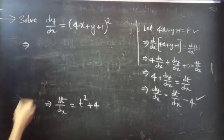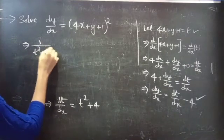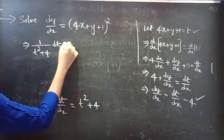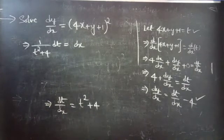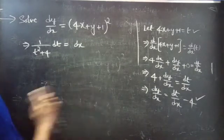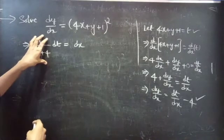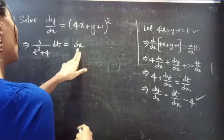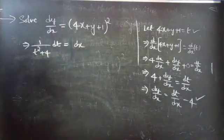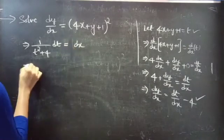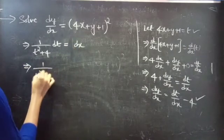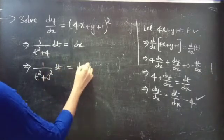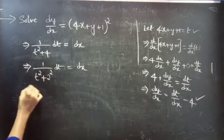Now, we can write this as 1 by t squared plus 4, a function of t, into dt equals to dx. We have a function of t on the differential dt side and no function of x on the right. So we take dx. That is, 1 by t squared plus 2 squared into dt equals to dx. Here the variables are separable, so we can perform integration.